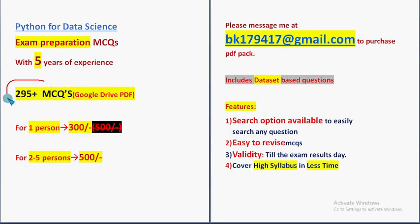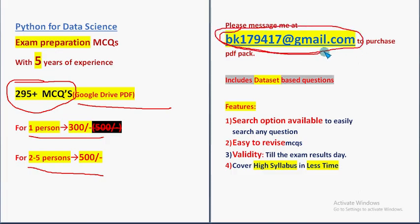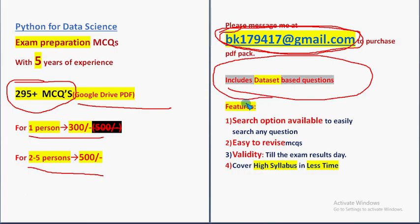295 plus MCQs in a Google Drive PDF restricted link — for one person 300, for two to five persons combined 500. Mail me at bk179417 at gmail.com. Includes dataset-based questions as well. Validity will be till the exam results day.